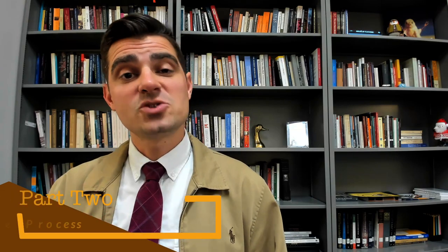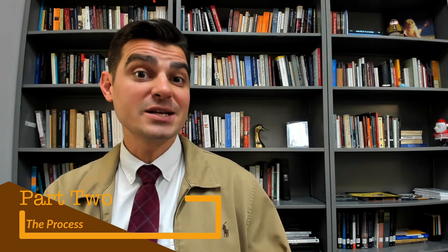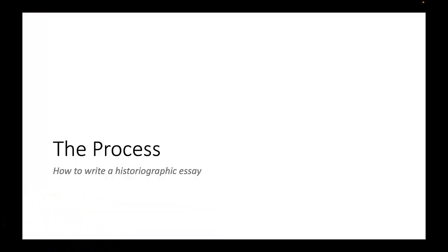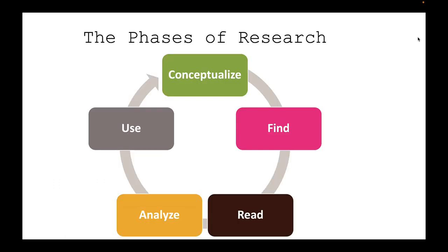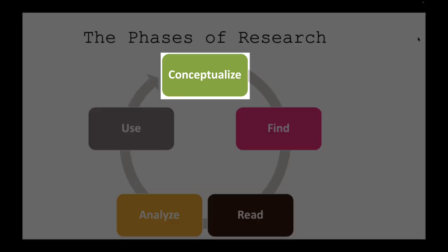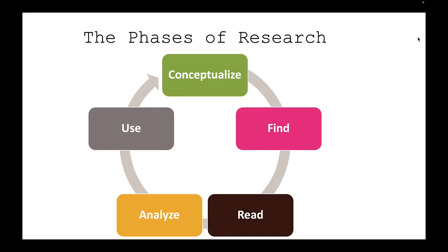Now let's take you through the process of writing a historiographic essay. The process is not that dissimilar to what you employed for your primary source papers. The first thing you're going to do is conceptualize the topic you want to focus on — you could run with something similar to your primary source paper. The difference is that you're not just deciding on a topic to research, but trying to find what historians are discussing about that topic. You're really searching for a debate.